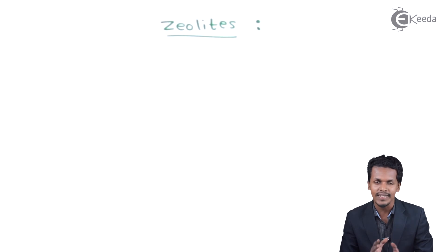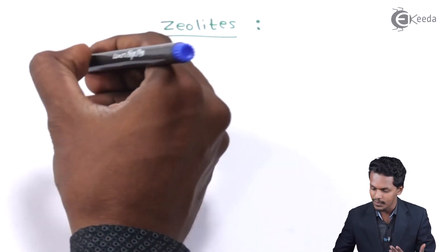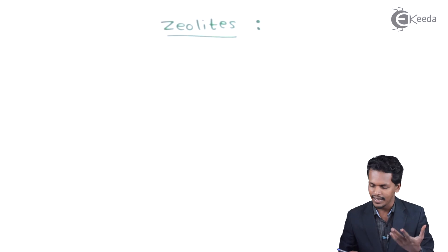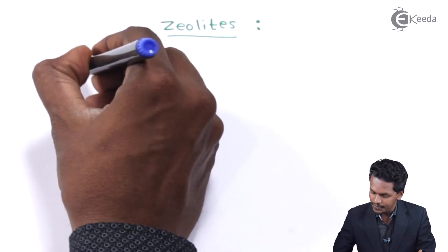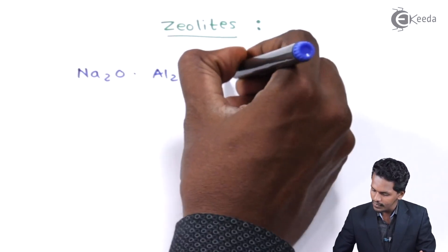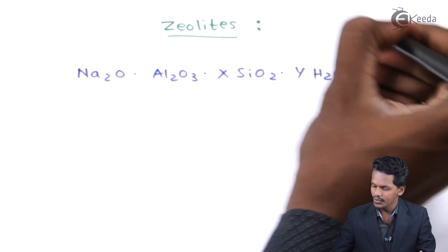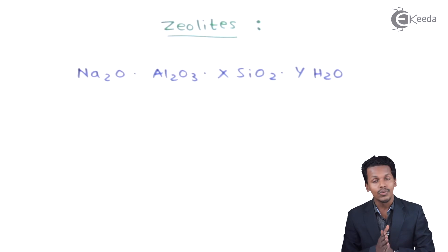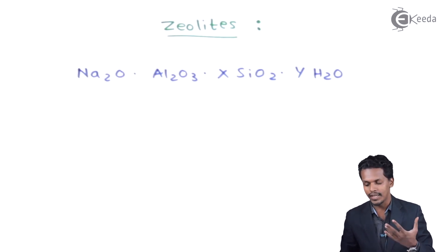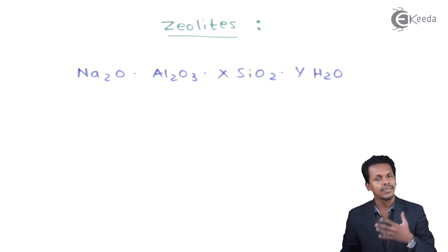There are two types of zeolites: natural and synthetic. A common synthetic zeolite is sodium zeolite, which is a hydrated alumina silicate with the formula Na2O · Al2O3 · SiO2 · H2O. It is called sodium zeolite because sodium and aluminium are the main metal components associated with the silicon structure.